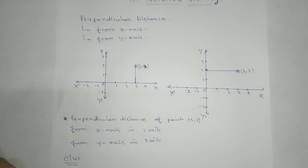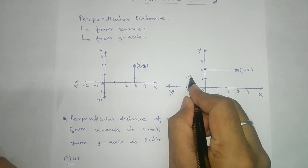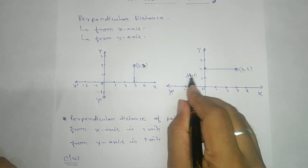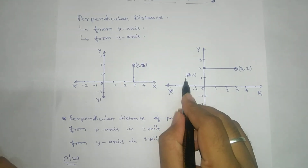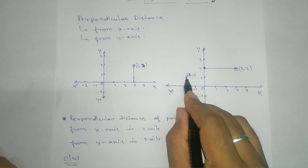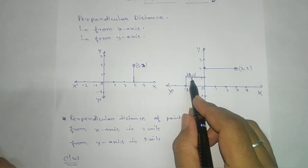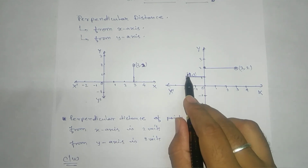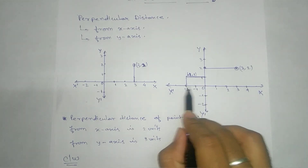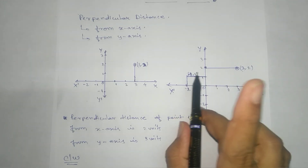Now consider the point (-2, 1). If you are asked for the perpendicular distance from the x-axis, that distance is one unit — the y-coordinate. If asked for the distance from the y-axis, many students say the answer is minus two, but distance can never be negative. So we write two units, not minus two. The length is two units.